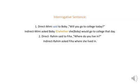Now come to interrogative sentences. We can make interrogative sentences in two ways: by using be verbs or modal auxiliaries, and by using relative pronouns. Look at the example. Mimi said to Bobby, 'Will you go to college today?' Indirect: Mimi asked Bobby if/whether she would go to college that day. Number two: Rahim said to Fiha, 'Where do you live?' Indirect: Rahim asked Fiha where she lived. So instead of the reporting verb, you can write down 'asked' or 'inquired,' and instead of the inverted comma, you can write 'if' or 'whether.'